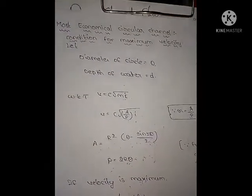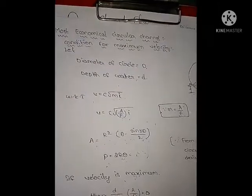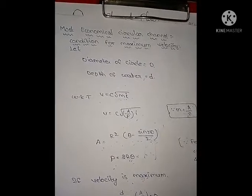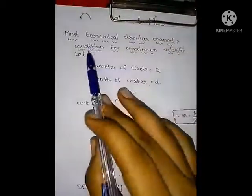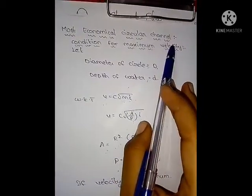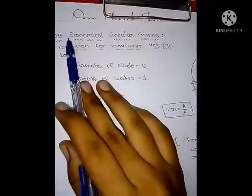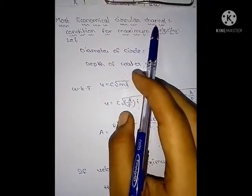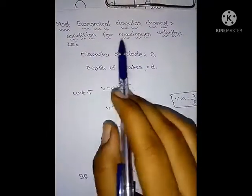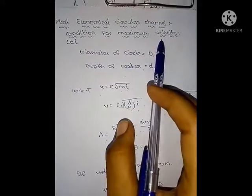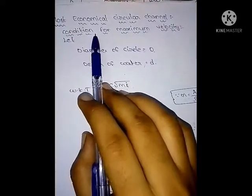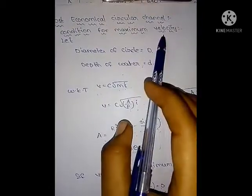Hello everyone, welcome to my channel. In this video we are going to discuss the derivation for the most economical circular channel. In this most economical circular channel there are two parts: the first one is the condition for maximum velocity and the second one is the condition for maximum discharge. First, let us see the condition for maximum velocity.